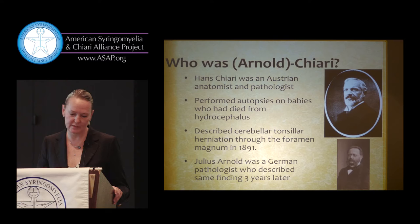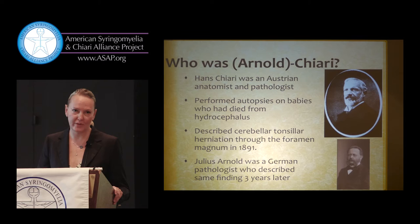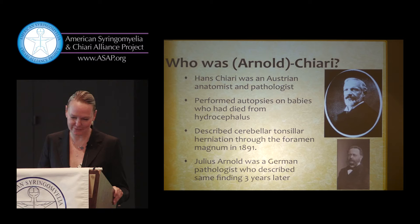Chiari described this cerebellar herniation in 1891. Three years later, Julius Arnold, who was also a pathologist and was German, described the same finding independently. Julius's students actually coined the term Arnold-Chiari and put his name first even though he wasn't the first to describe it.